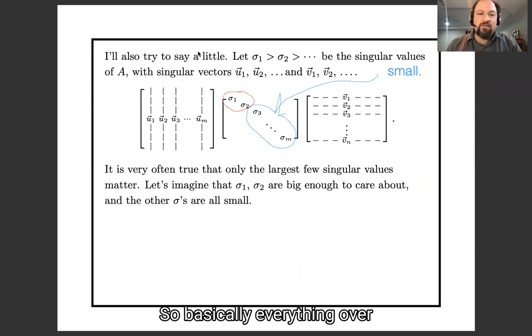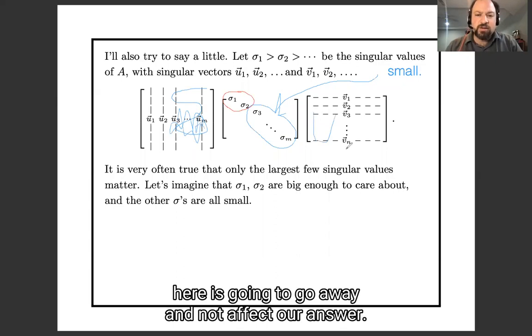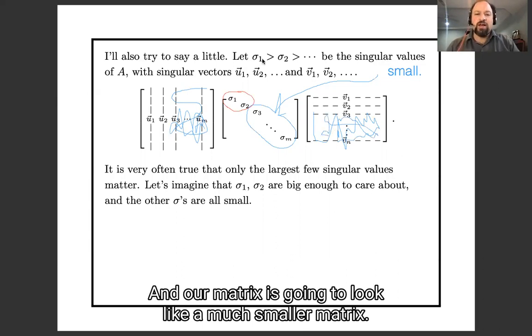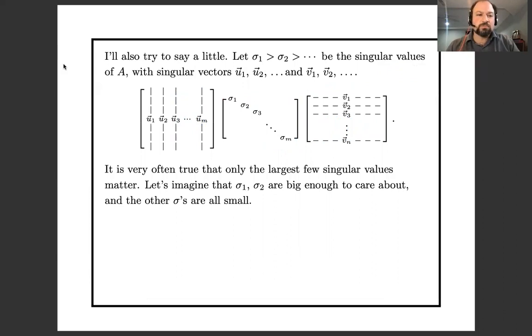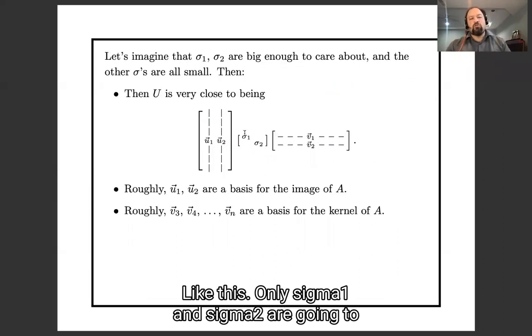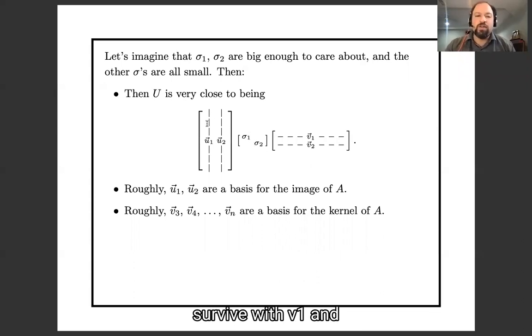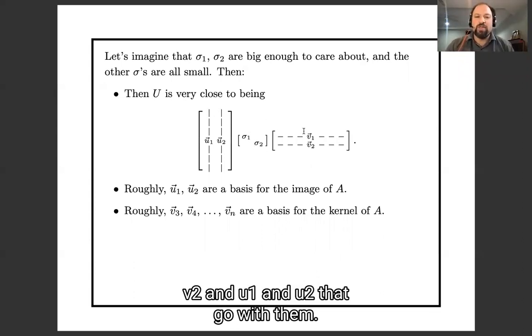So basically everything over here and everything over here is going to go away and not affect our answer, and our matrix is going to look like a much smaller matrix, like this. Only sigma 1 and sigma 2 are going to survive, and only the v1 and v2 and u1 and u2 that go with them.